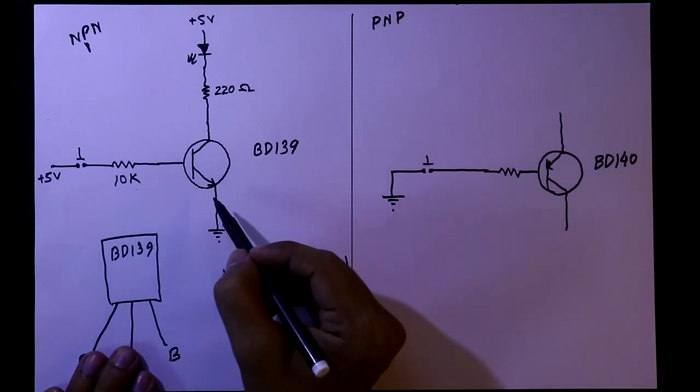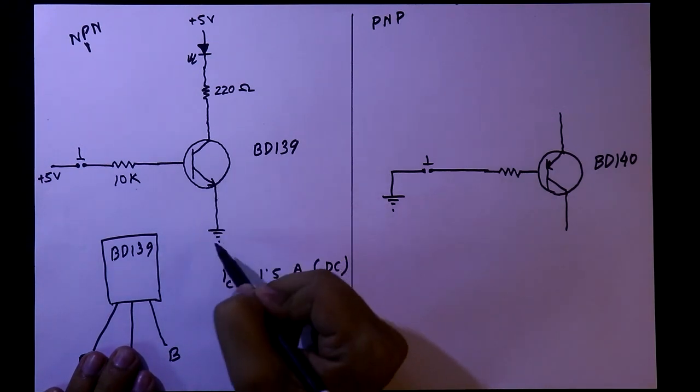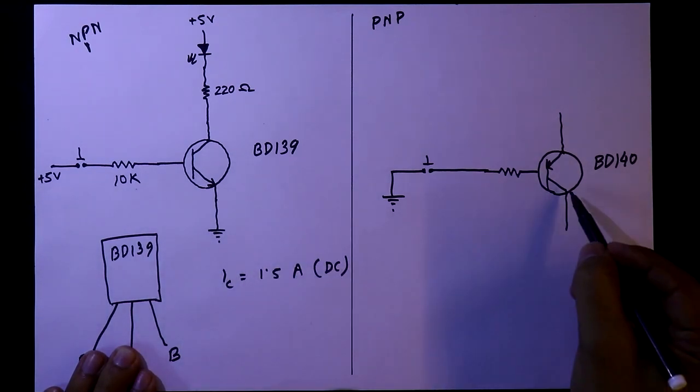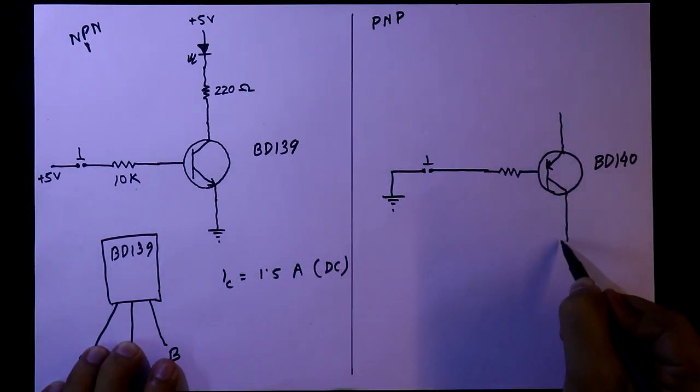In this NPN configuration we connected emitter to the ground. And in this PNP configuration we will connect collector to the ground.